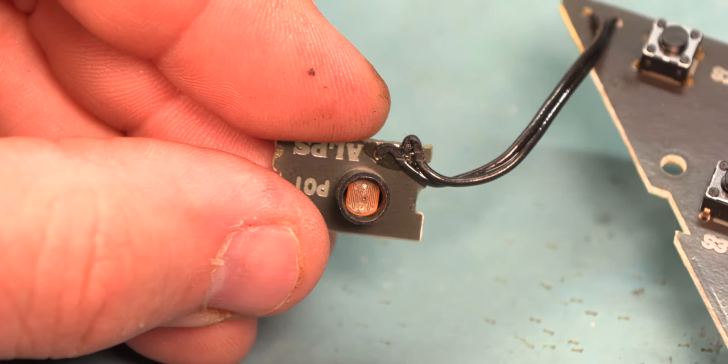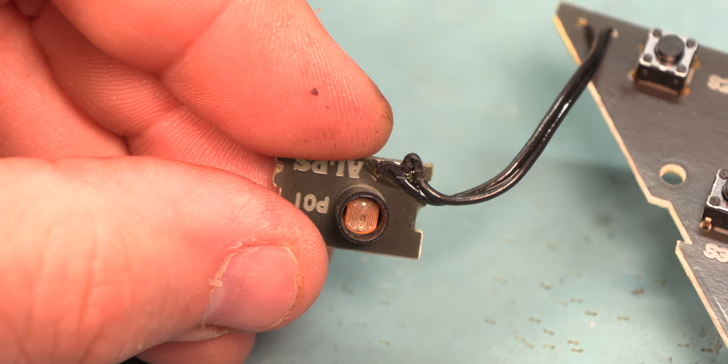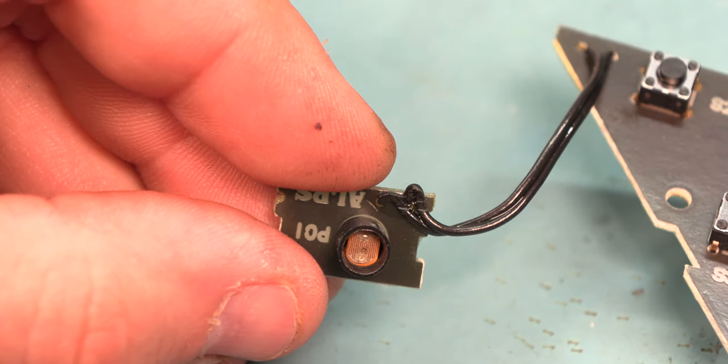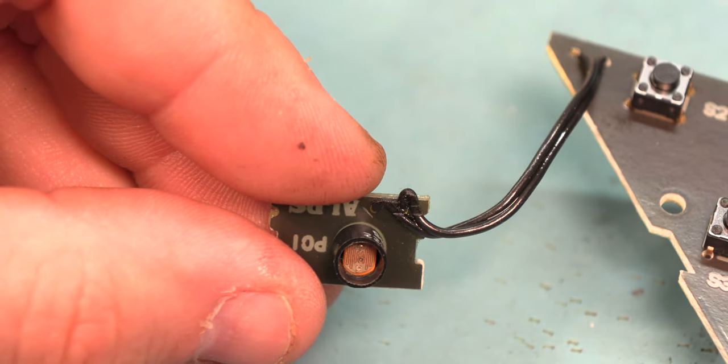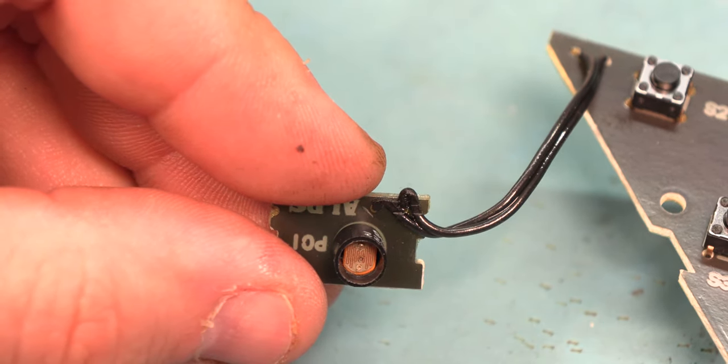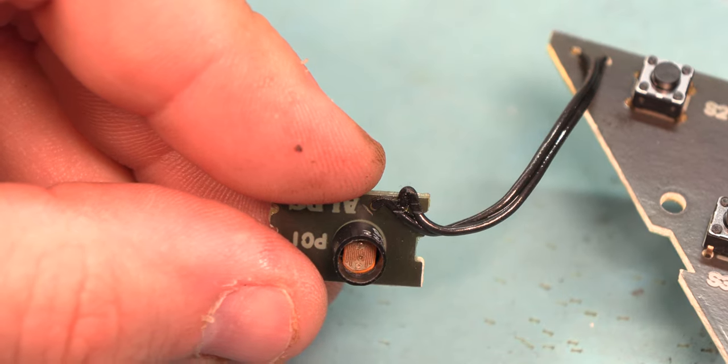While it's apart, we'll replace the photocell. It's fairly common for these to fade in the sunlight. The photocell is responsible for the dash lights dimming at night. It's very common for these photocells to fade and stop responding the way they should. So we'll replace the photocell while it's apart.